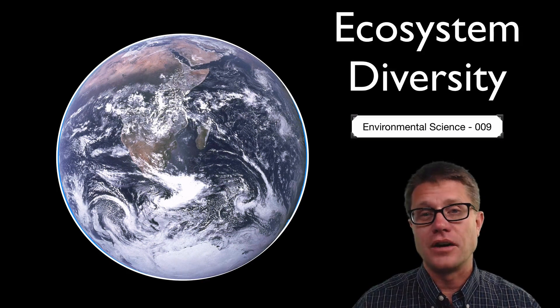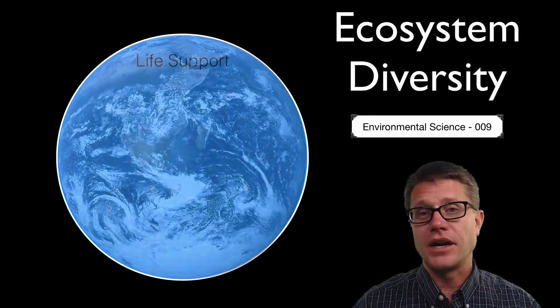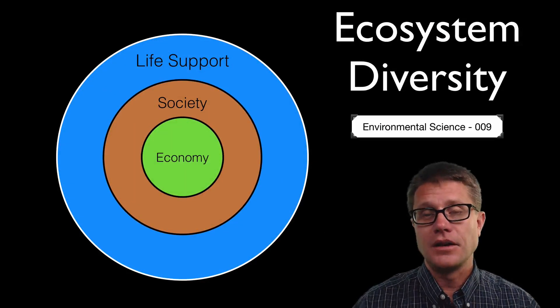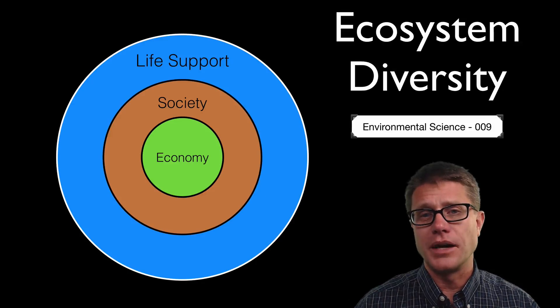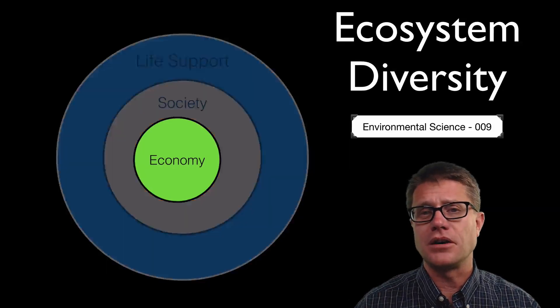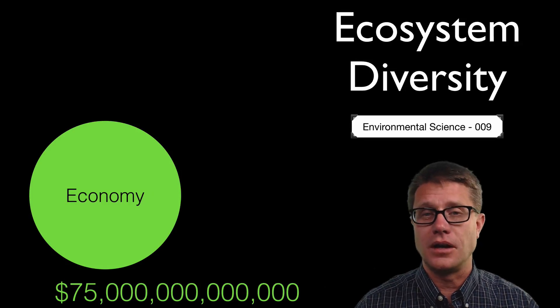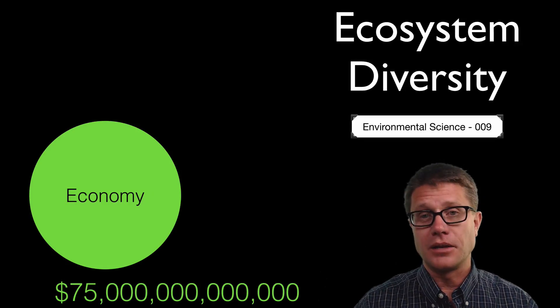A model we have talked a lot about so far is this idea that the earth provides life support for the society of humans which is driven by economy. Now economics is the choices that we are making. But economy, if we put a monetary value on it, it is going to be a really large number. It is 75 trillion dollars. That is the world gross product.